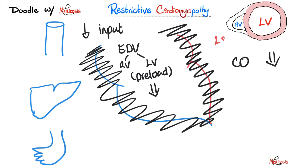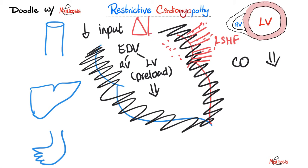How about left-sided heart failure? I will be unable to accept blood into the left ventricle, so blood piles up into the left atrium, then into the pulmonary veins, and the lungs get congestion — pulmonary congestion, pleural effusion, pulmonary edema, cough, dyspnea, orthopnea, paroxysmal nocturnal dyspnea, hemoptysis, and repeated chest infections.